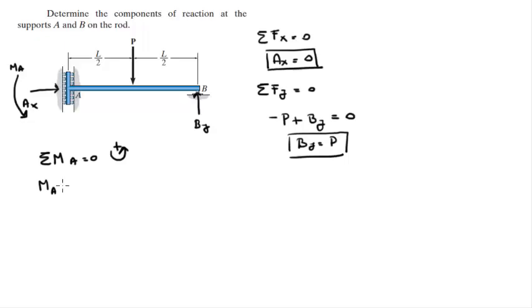So you got the moment at A, the reaction moment at A, minus the moment that this P is creating, which is minus because it's turning this rod clockwise at a distance of L over 2. So it's P times L over 2. And then you got the reaction of By, which is plus By times L.